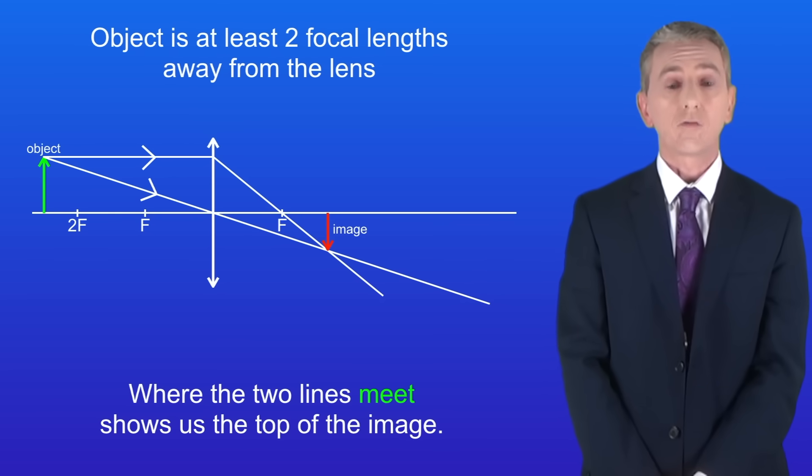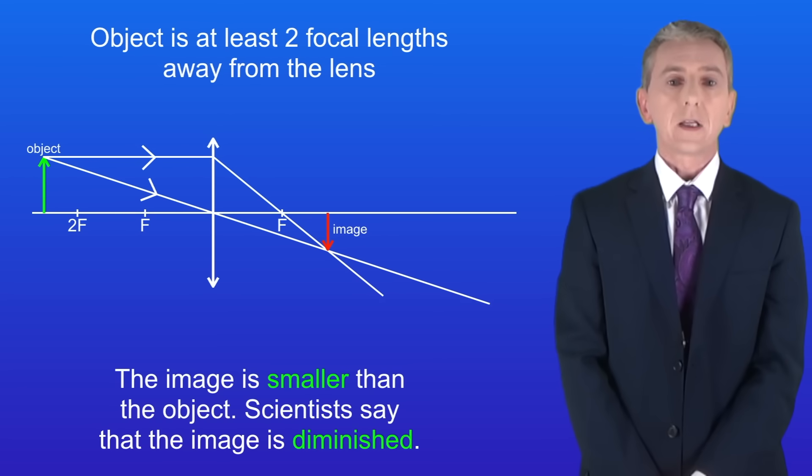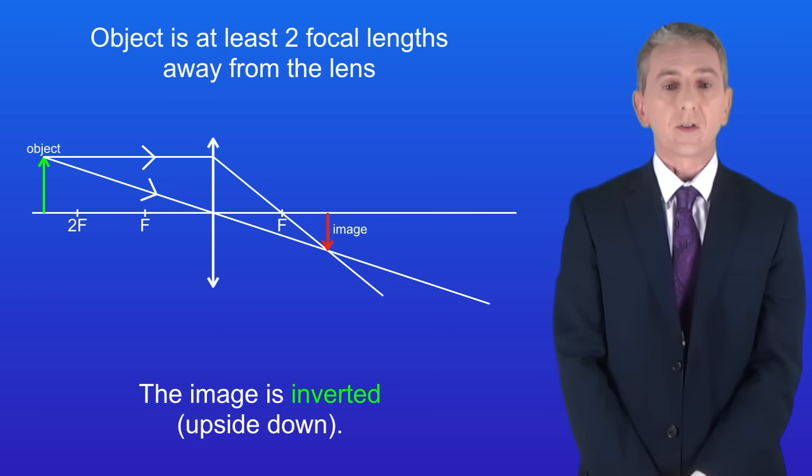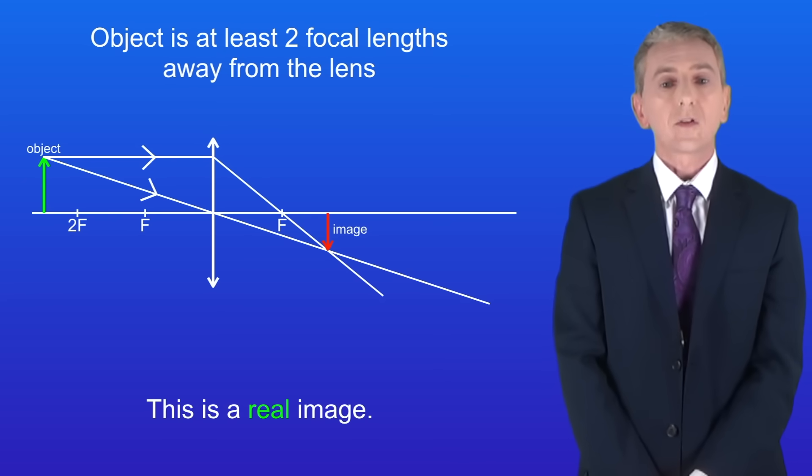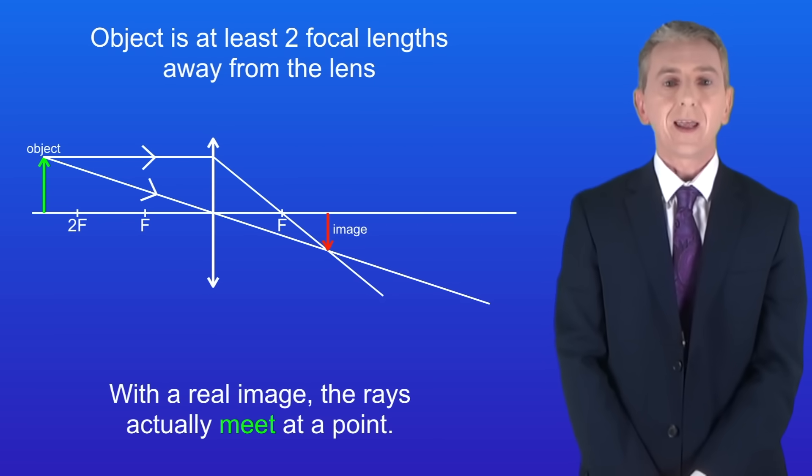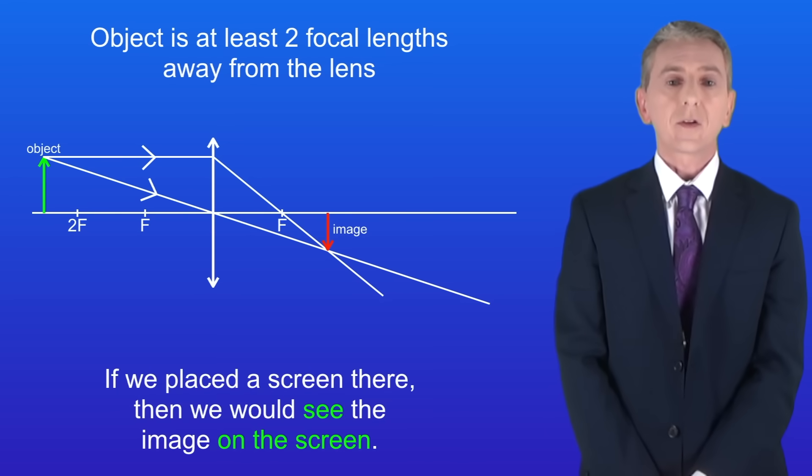Now this image has three key features. Firstly as you can see the image is smaller than the object. Scientists say that the image is diminished. Secondly the image is inverted, in other words upside down. And lastly this is a real image. With a real image the rays actually meet at a point. If we placed a screen there then we would see the image on the screen.